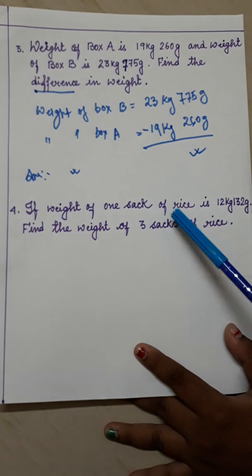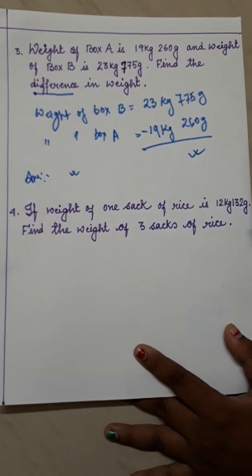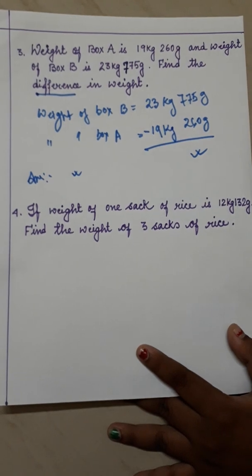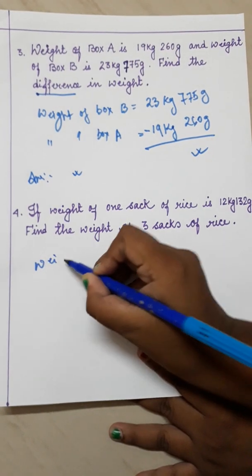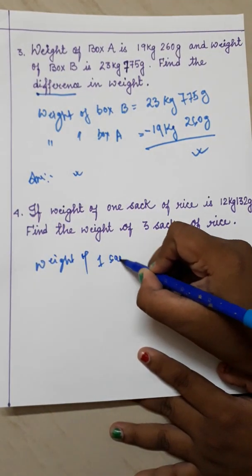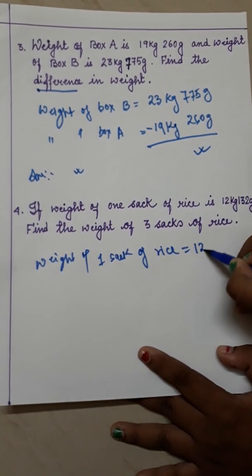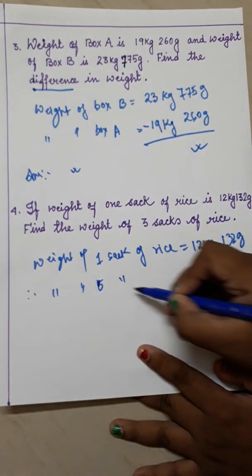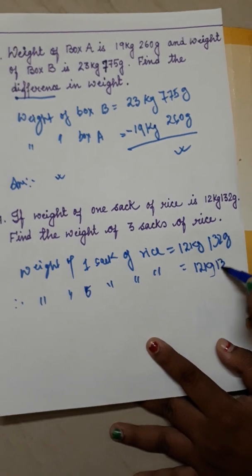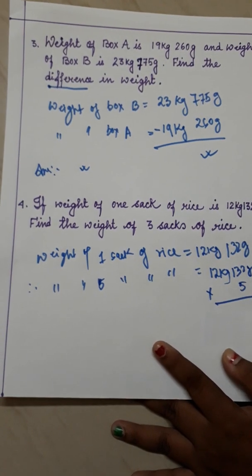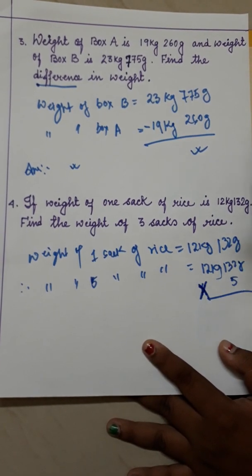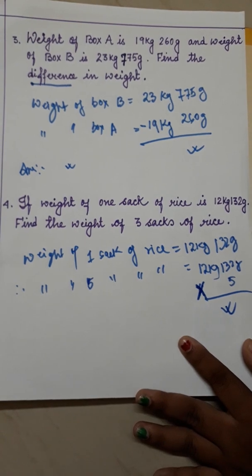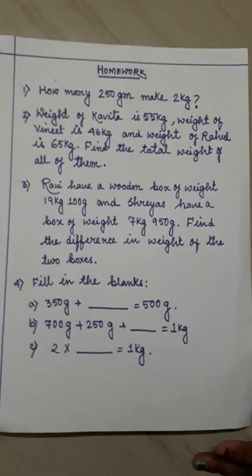Next, if weight of 1 sack of rice is 12 kg 132 gram, what will be the weight of 3 sacks of rice? What we have to do? Yes, multiplication. Of course, here also we have to write statement. We will write weight of 1 sack of rice equals to 12 kg 132 gram. So weight of 5 sacks of rice equals to 12 kg 132 gram into 5. And after that what you have to do? Just you will do multiplication. I know you can easily do the multiplication and you can write the answer also. So you will do the multiplication here and after that you will do the answer.